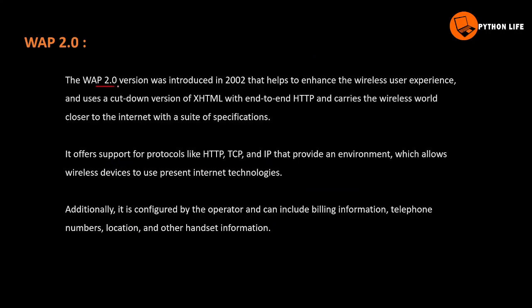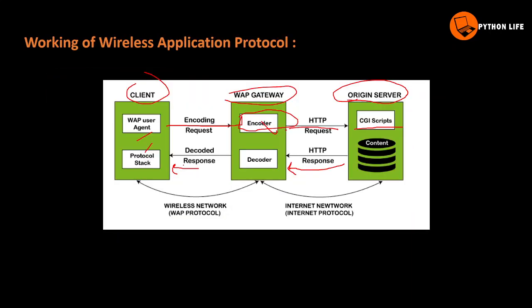WAP 2.0 is an upgraded version of WAP 1.0. It helps to enhance the wireless user experience with a clearer user interface. The user interface uses a cut-down version of XHTML, with end-to-end HTTP, bringing the wireless world closer to the internet through a suite of specifications.